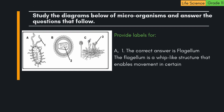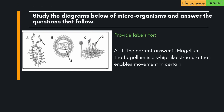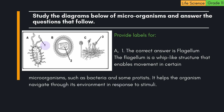Question: Provide labels for A1. The correct answer is flagellum. The flagellum is a whip-like structure that enables movement in certain microorganisms, such as bacteria and some protists. It helps the organism navigate through its environment in response to stimuli.